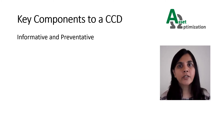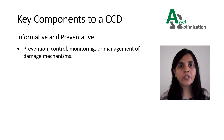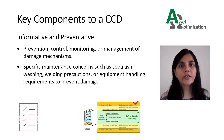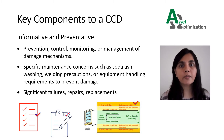The third category of information included in a CCD is informative and preventative. This includes information used to prevent, control, monitor, or manage damage mechanisms, such as integrity operating windows. It also includes specific maintenance concerns, such as soda ash washing to neutralize polythionic acids during shutdowns, welding precautions, or special equipment handling requirements, such as minimum pressurization temperatures, to prevent brittle fracture damage. A listing of significant failures, repairs, and replacements due to damage mechanisms experienced should also be included.